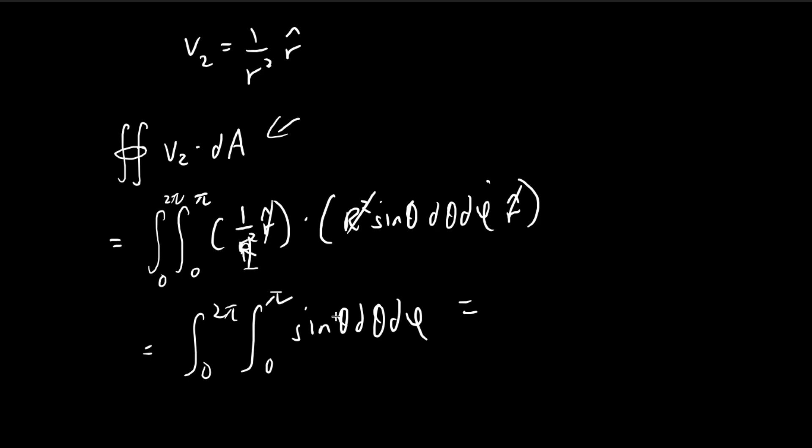Integrating out the phi, there are no phi terms inside, so it just gives us 2π. Integrating sine theta becomes negative cosine theta from 0 to π, and you get 1 minus negative 1. So in the end, you get 4π. This is the value of the surface integral.